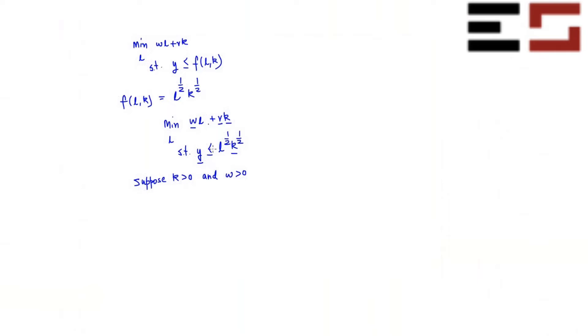Exactly. Y square by K. Very good. So notice that this particular constraint can be rewritten as L is greater than or equal to Y squared by K. Do you agree? Can I write this constraint in this way? I just square both sides, take K on the other side and I'll get this. Now notice that as your labor increases your cost increases because W is positive. So what is the smallest labor that achieves this constraint? Because you know the higher the labor the higher the cost, you want to minimize the cost subject to this constraint. So what is the smallest labor quantity that satisfies this constraint? It's Y square by K, right? So the solution is L equal to Y square by K.